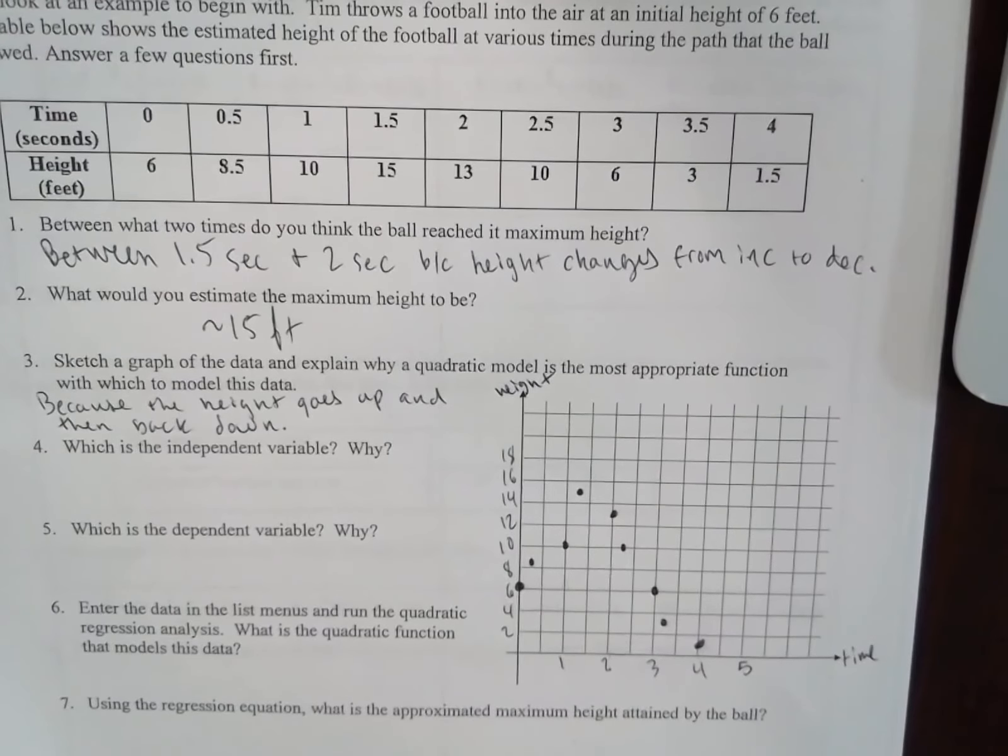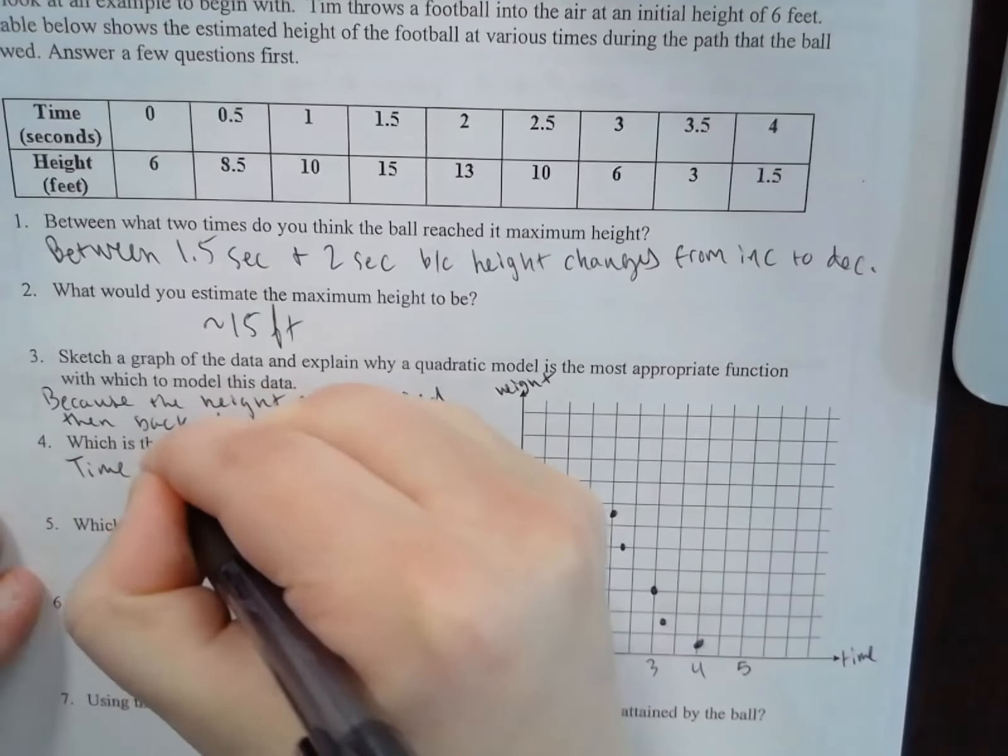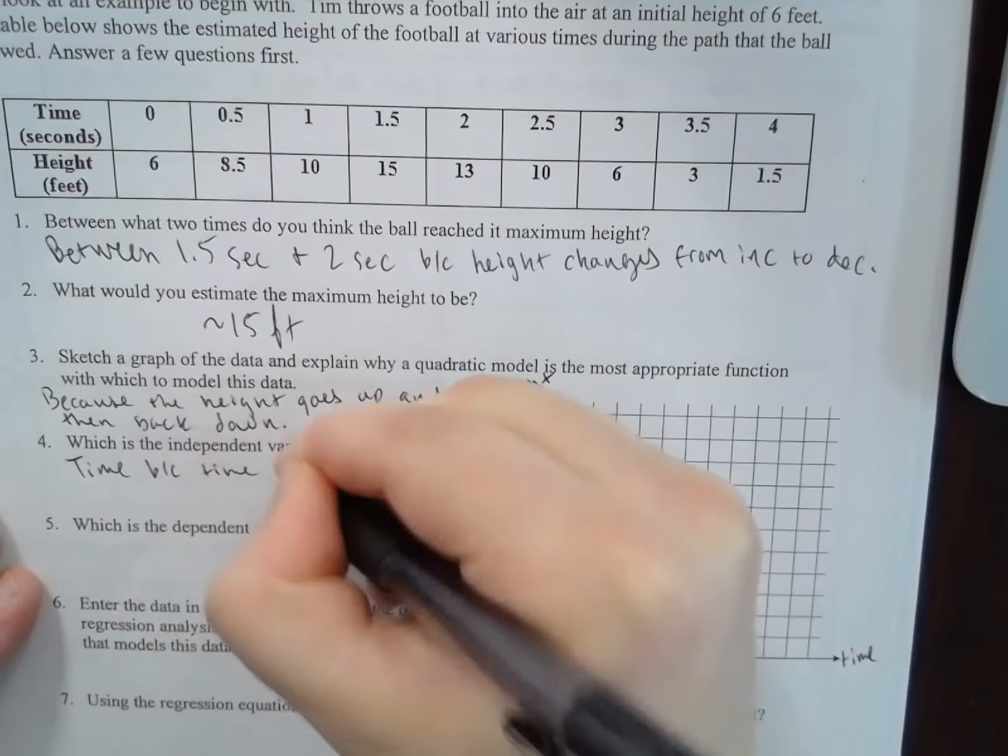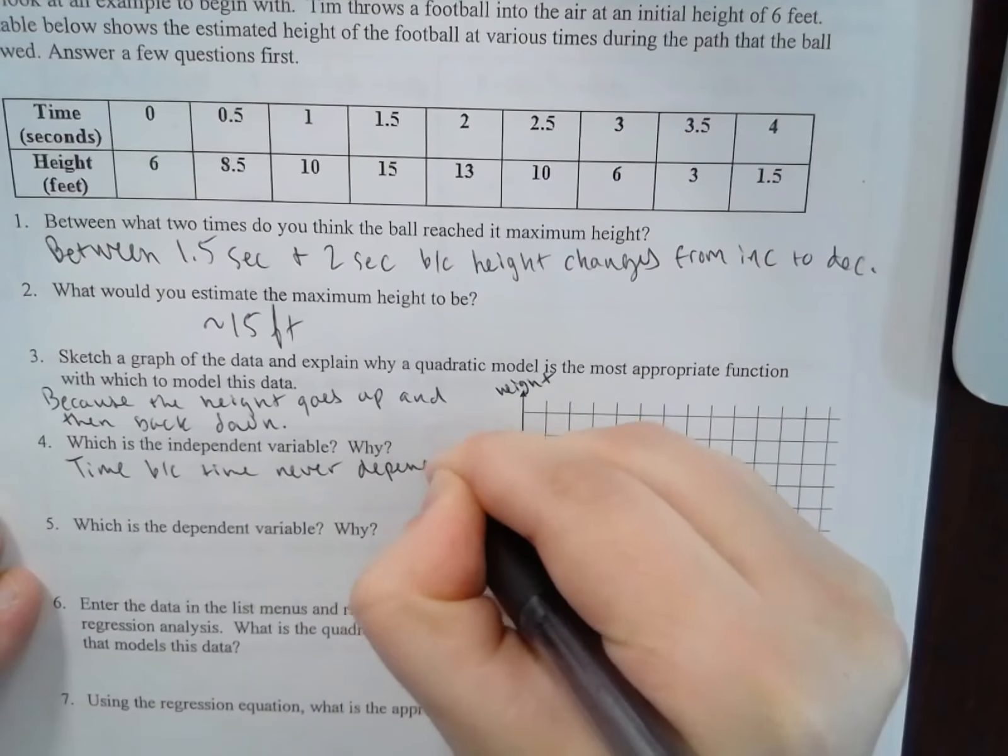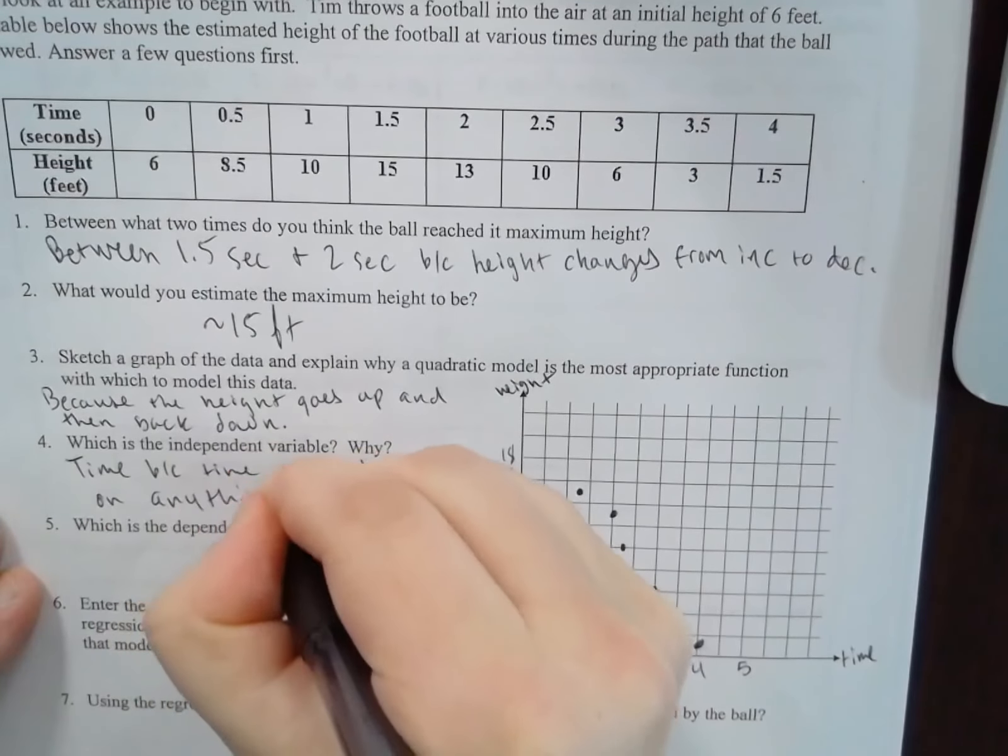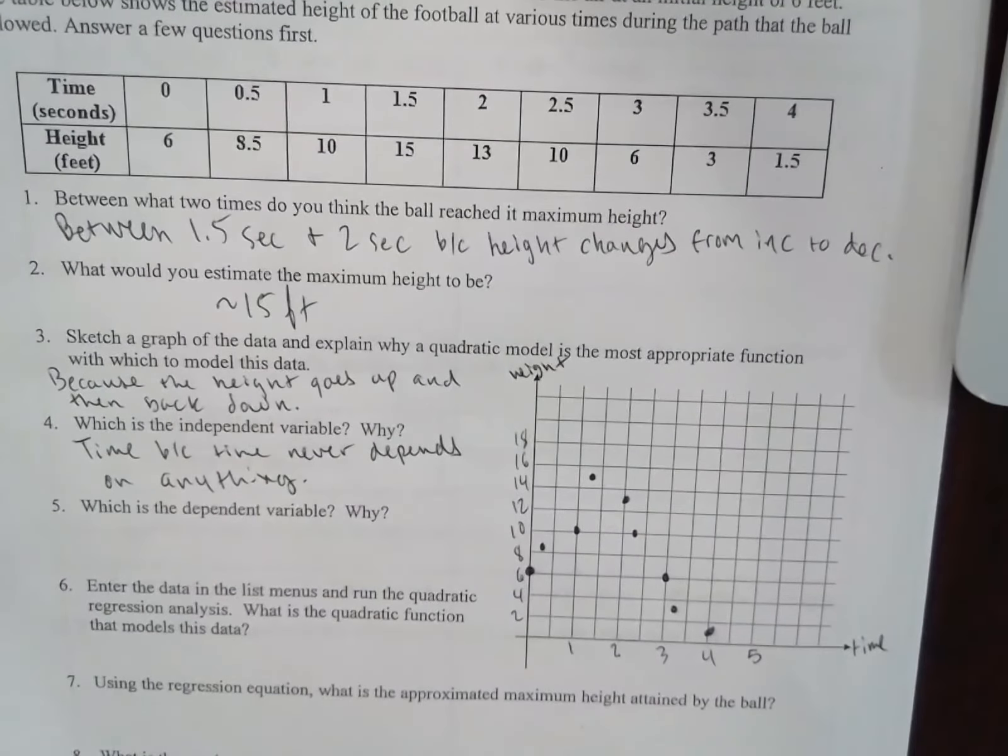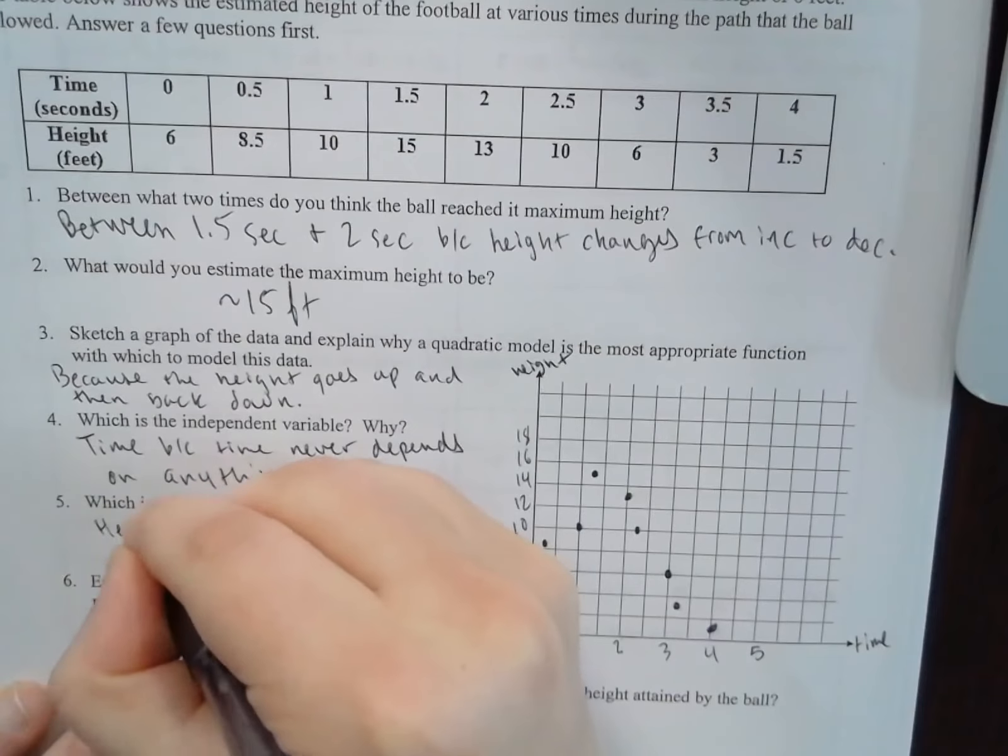The independent variable is time because time is always the independent variable. If you have time in something, it has to be the independent variable. It's time because time never depends on anything. You can't change time. So it's the independent variable.